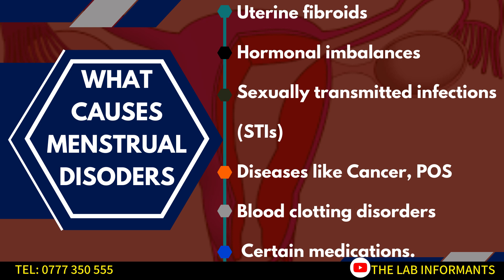Here are some of the factors that can contribute to menstrual disorders. These include uterine fibroids, hormonal imbalances, a history of sexually transmitted infections (STIs), diseases like cancer or polycystic ovary syndrome (PCOS), blood clotting disorders, and in some cases the use of certain medications such as hormonal therapy or birth control pills.